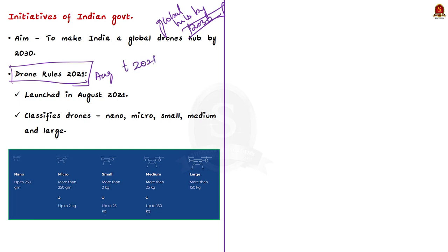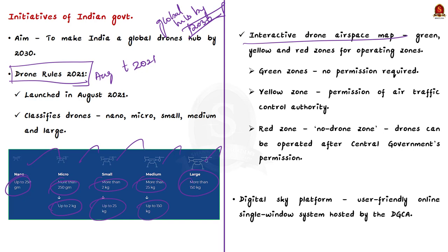Under the Drone Rules 2021, an interactive drone airspace map was developed providing green, yellow, and red zones. No permission is required to operate drones in the green zone. In the yellow zone, permission of the Air Traffic Control authority is required. The red zone is the no-drone zone where drones can only be operated with central government permission.